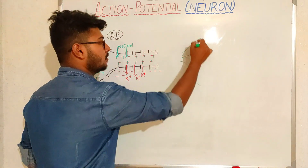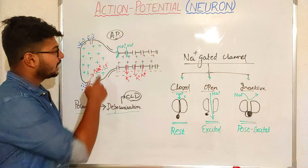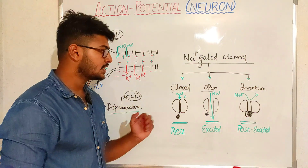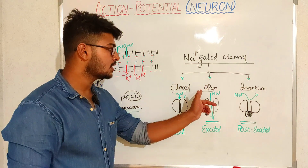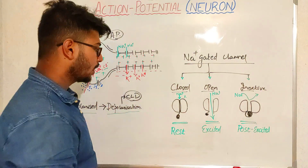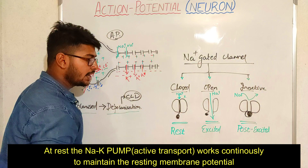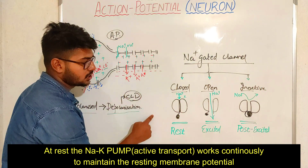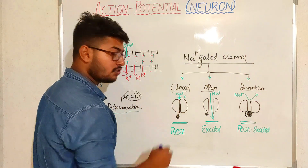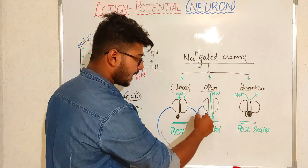An important concept is the three phases of sodium-gated channels present in neuron membranes: the closed phase, the open phase, and the inactive phase. When the excitable cell is in a resting condition — with negative charge inside and positive charge outside — the sodium-gated channel is in the closed state, so sodium cannot enter the cell. When the cell gets excited and transforms from polarized to depolarized state, the channel opens and sodium influx takes place.